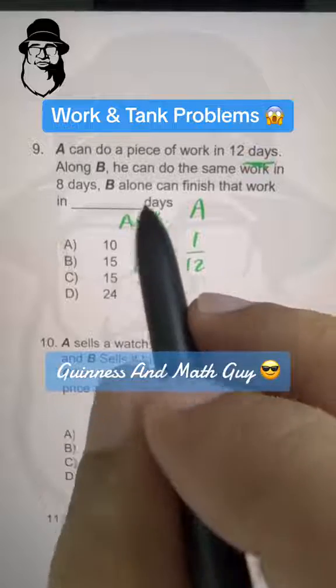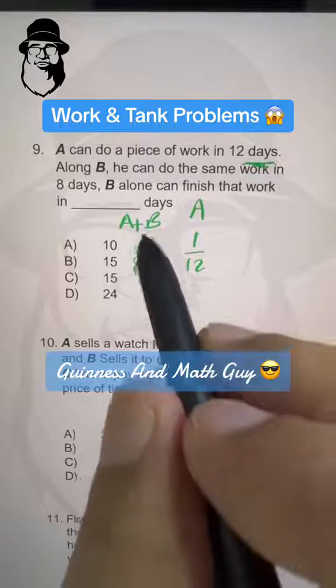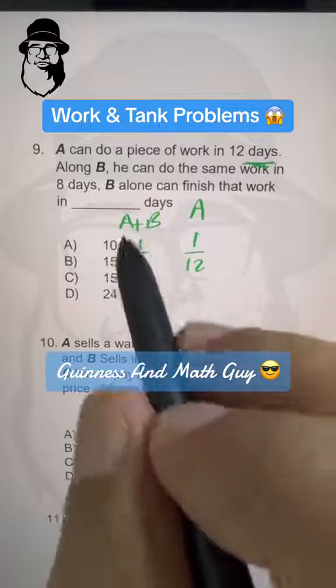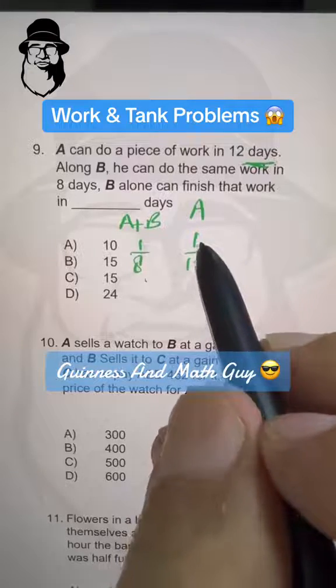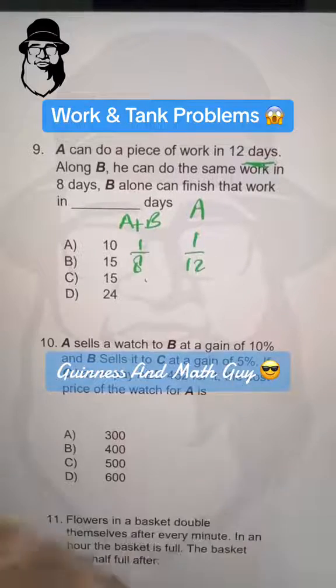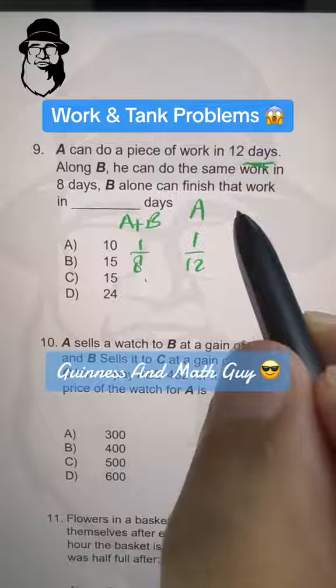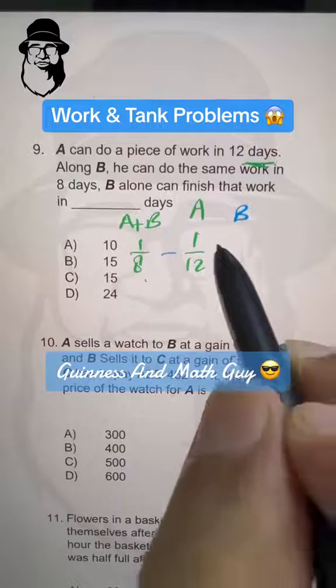And the question is B alone can finish. So from combined efficiency, we'll subtract the efficiency of A. We'll get efficiency of B, so subtract it.